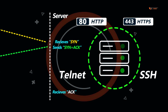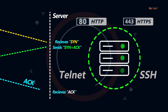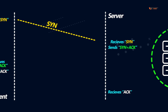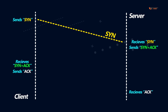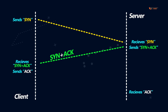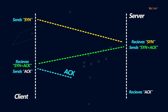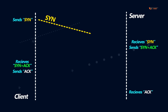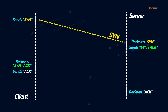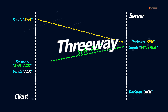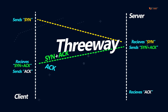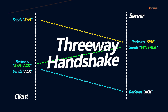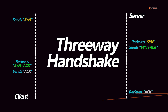Now, if the client wants to proceed with the communication, it will send an ACK segment, which marks the end of the three-way handshake. Now let's talk about why this is important in cybersecurity.